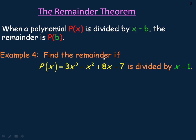In this example we're asked to find the remainder if this polynomial is divided by x minus 1. So we would substitute 1 in place of x to find what that remainder would be according to the remainder theorem. We substitute 1 in place of x here, here, and here, and we evaluate all that.